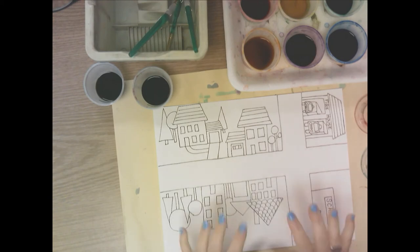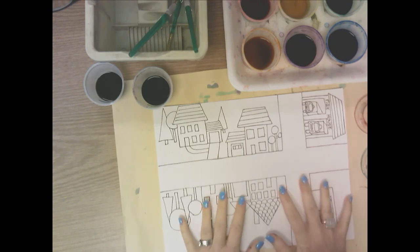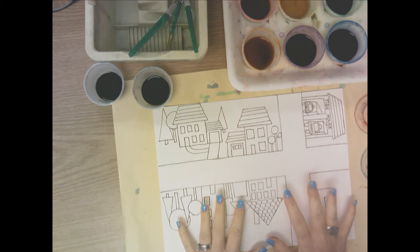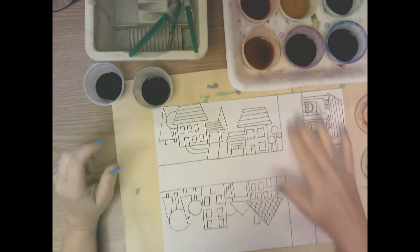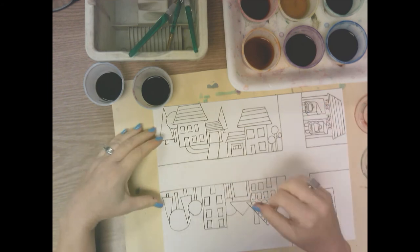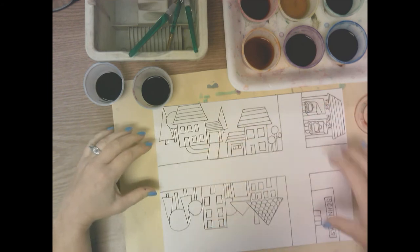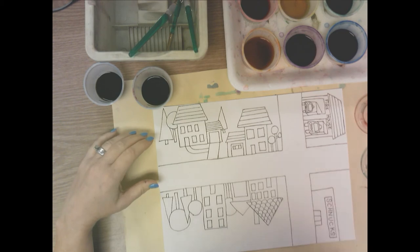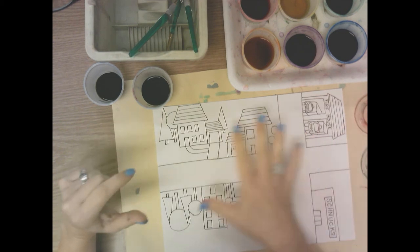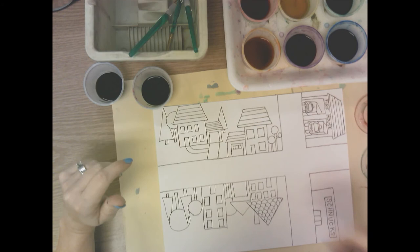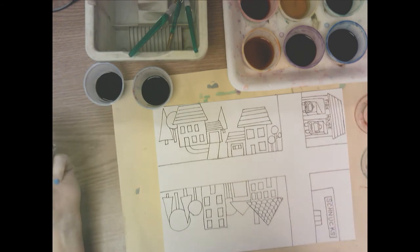So now we're going to add color to our collaborative city. Each of us got one part of the city, which is the road part. And then we added buildings of our choice next to the road, things that you need in a city. You need homes, apartments, a firehouse, grocery stores, restaurants, things like that.